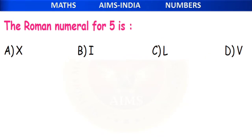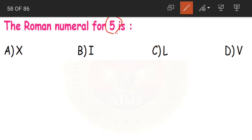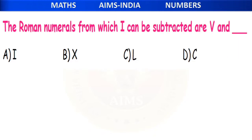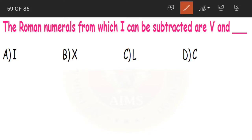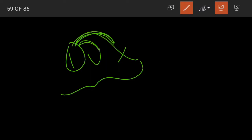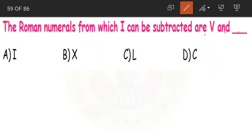Next question: the Roman numeral for 5 is? We know that I is 1, V is 5, and X is 10. So V stands for 5, that is option D. Very easy question. Next: the Roman numerals from which I can be subtracted are V and dash. I can be subtracted from only the next two numerals, which are V and X. So option B, X is our correct answer.